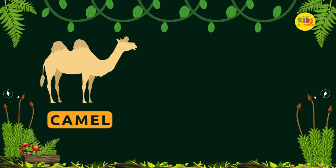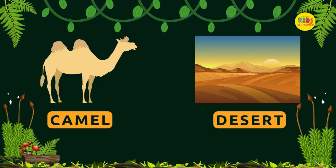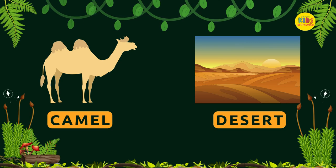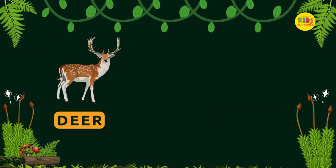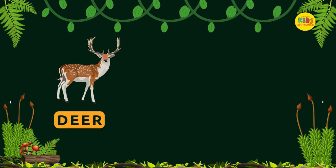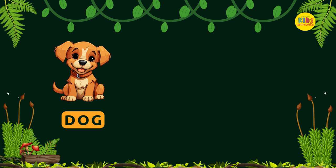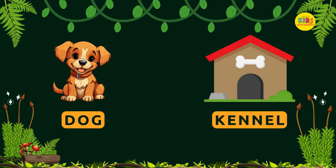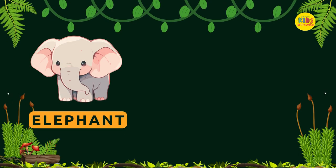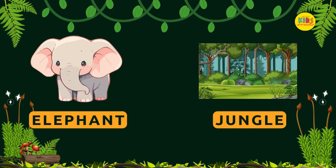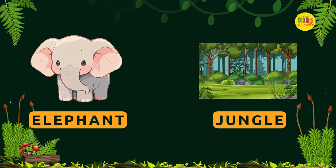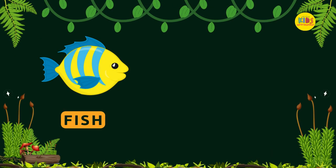Camel — Desert. Deer — Grasslands. Dog — Kennel. Elephant — Jungle. Fish — Pond.